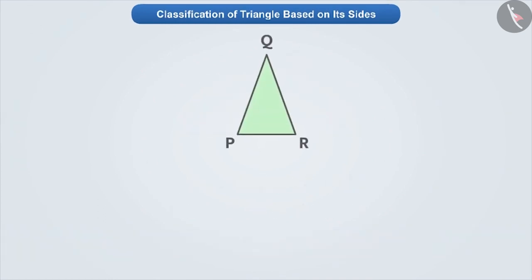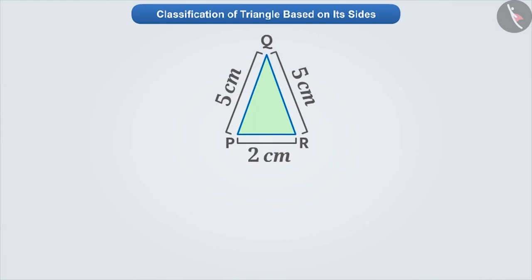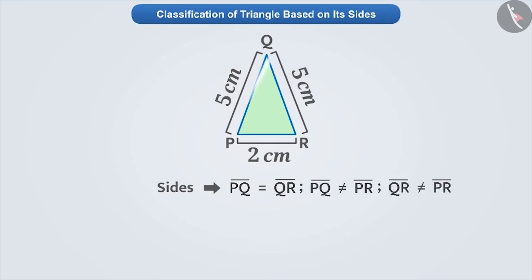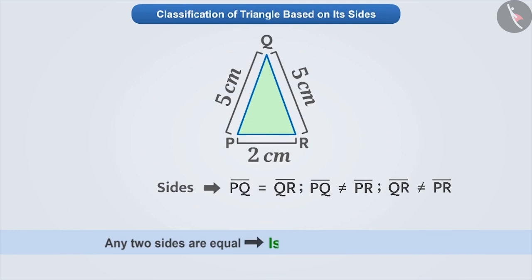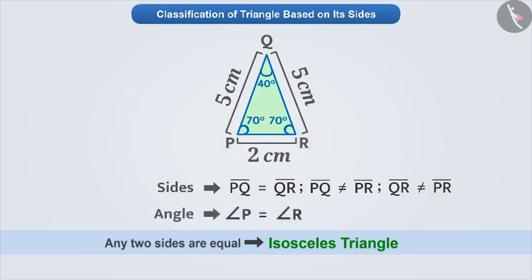Now, look at this triangle. If we take the measurement of its sides, then we find that two of its sides are equal and the third side is not equal to the other two sides. A triangle whose any two sides are equal is called an isosceles triangle. If we measure its angles, then we will know that the angles opposite to equal sides are also equal. This means that two sides and two angles of an isosceles triangle are equal.